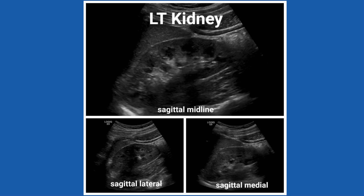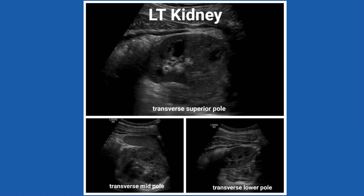Move on to the left kidney and complete the same steps you did for the right side: sagittal midline, lateral, medial — measure. Continue on to transverse and repeat the steps from the right: superior, mid, and inferior poles, with measurements at the transverse mid-pole portion. Always look for pathology — that's literally your job.